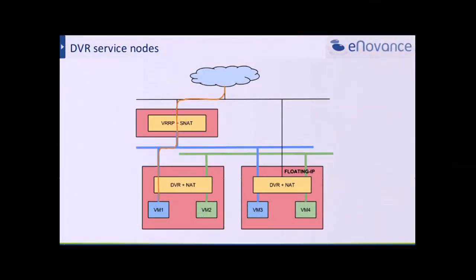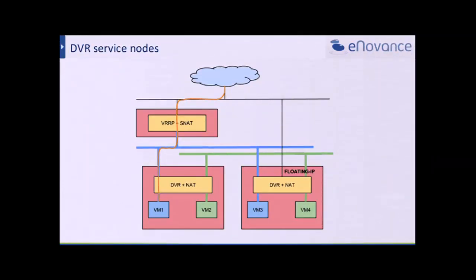Since DVR is not currently able to implement SNAT capabilities, when a VM is started without a floating IP, we still need an SNAT mechanism to get an internet connection. We can combine the two solutions: we have a service node that hosts the SNAT mechanism and also some services that cannot be hosted by the DVR. So on top we have the service node running with VRRP, and we still have the DVR on each compute node.